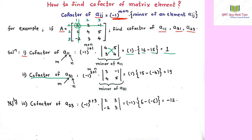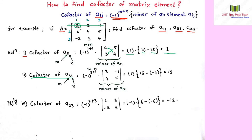Now let us find the cofactor of a31. Here m equals 3 and n equals 1, so we use minus 1 to the power 3 plus 1. To get the minor, we delete the third row and the first column.